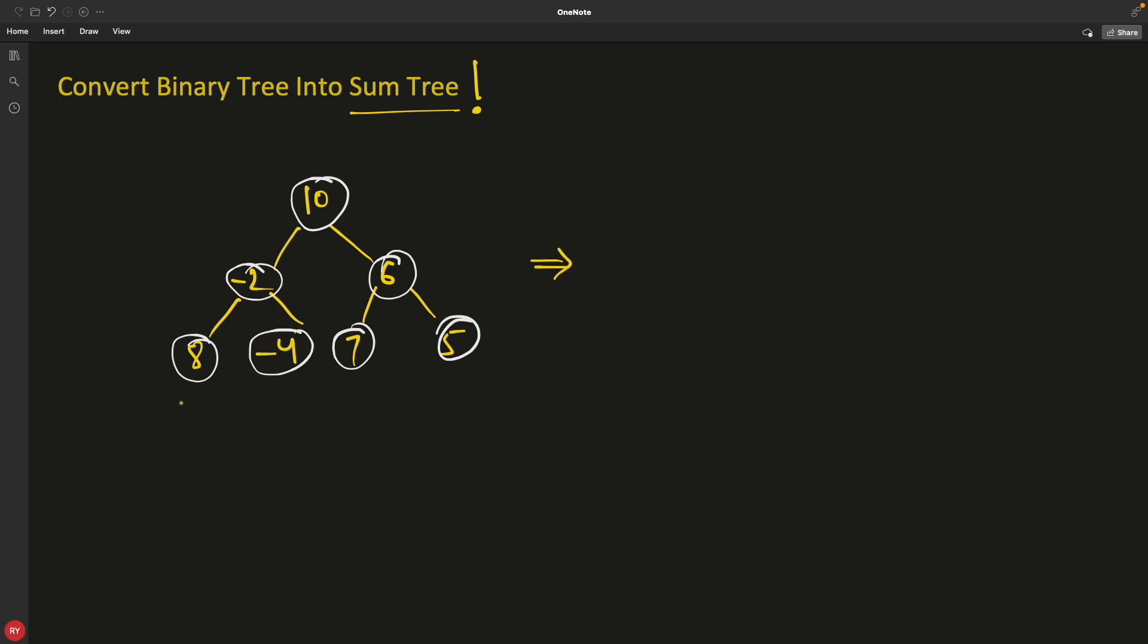And what do I mean by that is, if you see this, 8 doesn't have anything in the left and right. So we'll keep 0 for that position. So this will have 0 and similarly this 4 also doesn't have any left and right. So summation of 0 and 0 is 0. Now going to this one, or let's try to understand it like this,